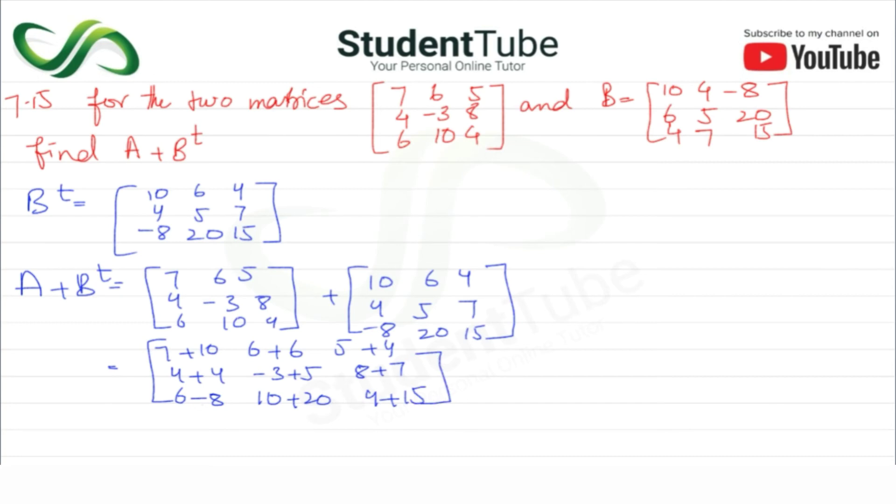So A plus B transpose equals: 7 plus 10 is 17, 6 and 6 is 12, 5 and 4 is 9, 4 and 4 is 8, -3 plus 5 is 2, 8 and 7 is 15, 6 minus 8 is -2, 10 plus 20 is 30, and 15 plus 4 is 19. This is the answer.